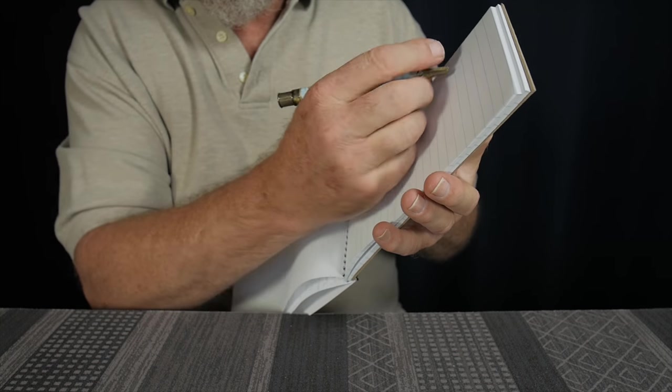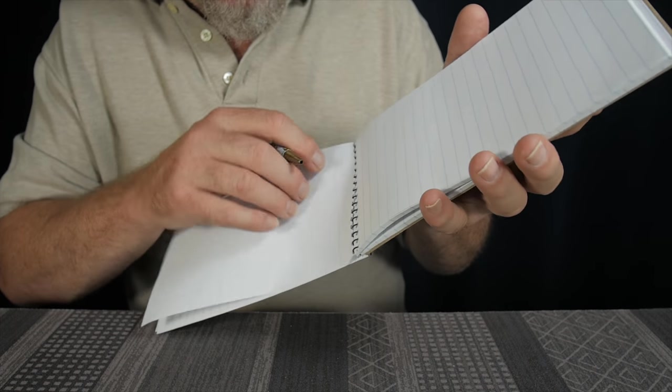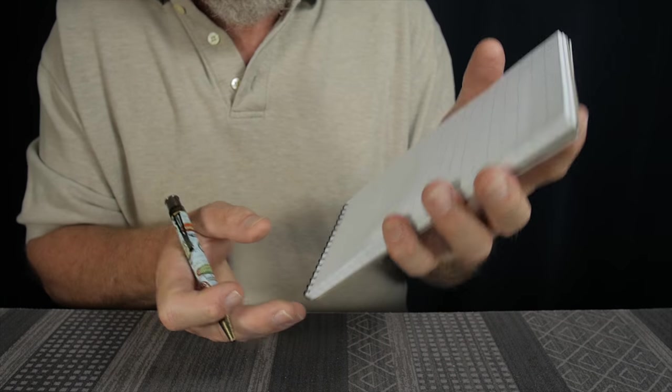Whereas if you're using the notebook in the upside down mode, then you get to the bottom of the page, just go like that, and you can continue writing. Go like that, and you can continue writing. It's a little bit quicker. And when you get a break in the action, you can stop and neatly fold it as time permits later on.